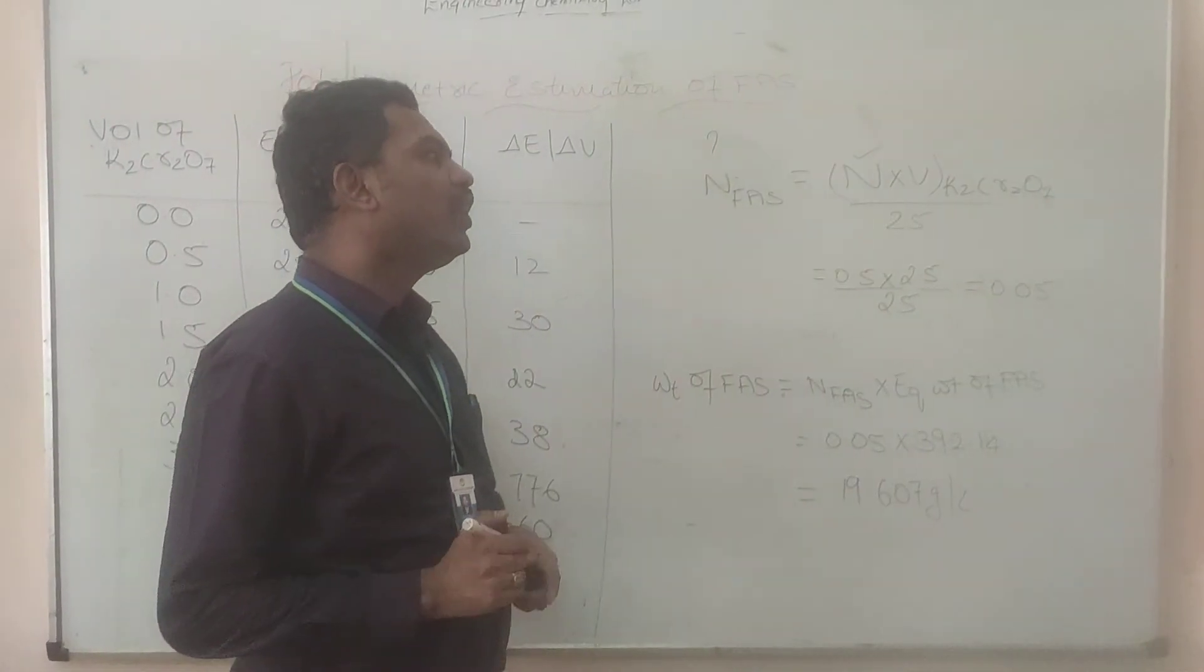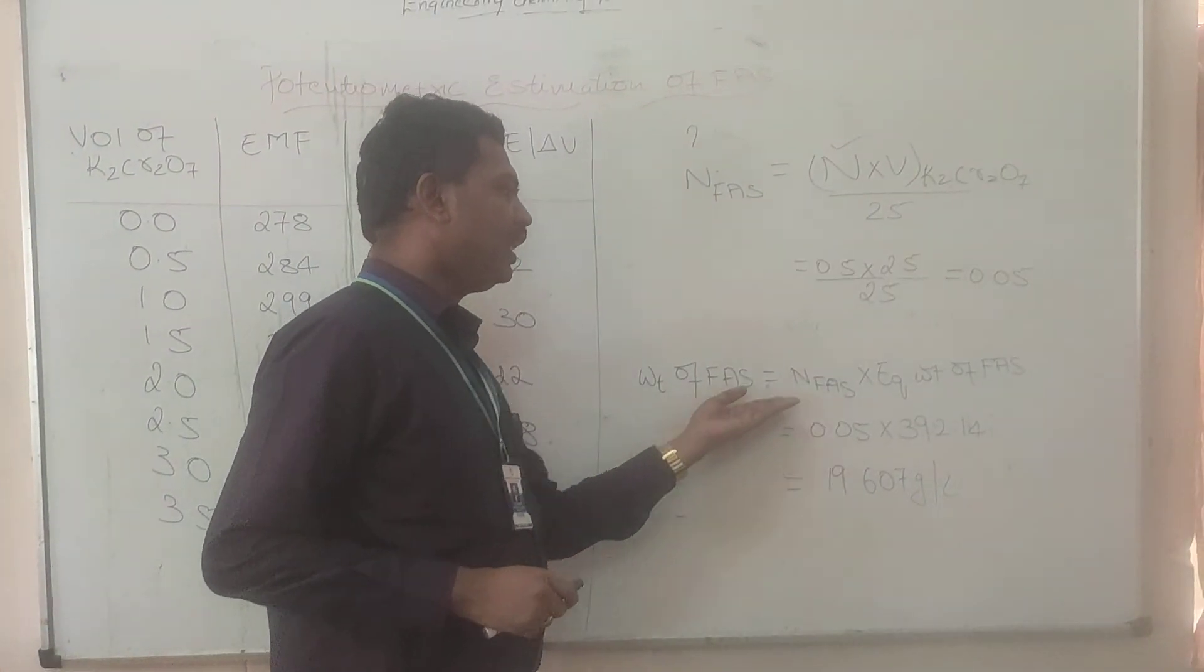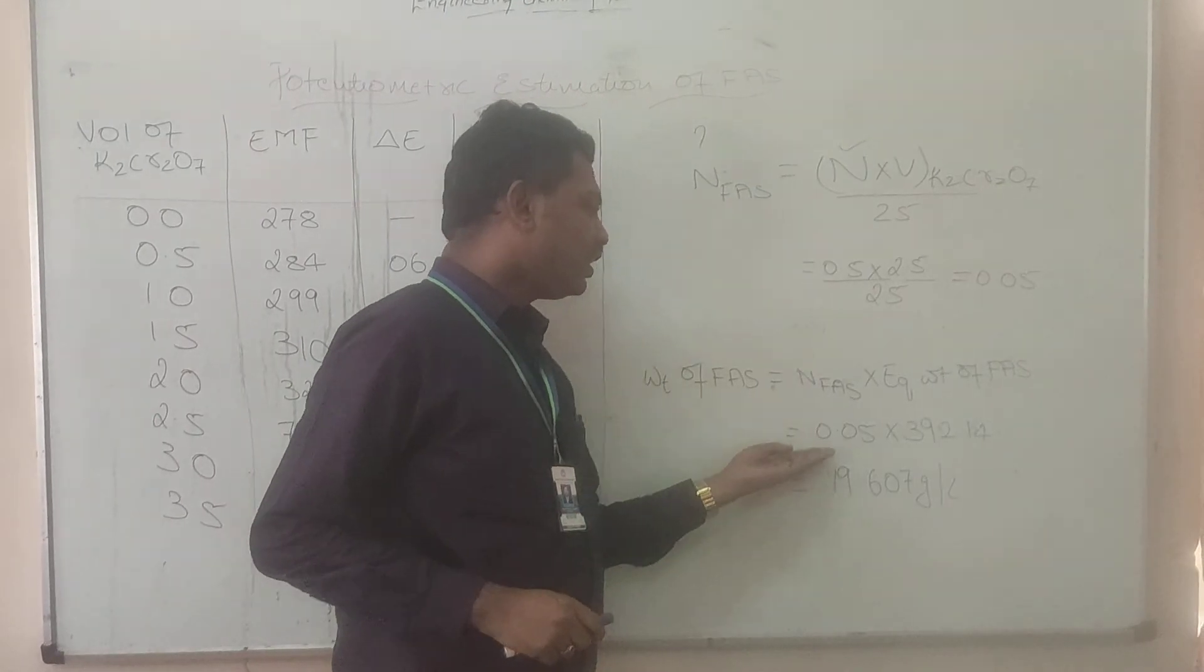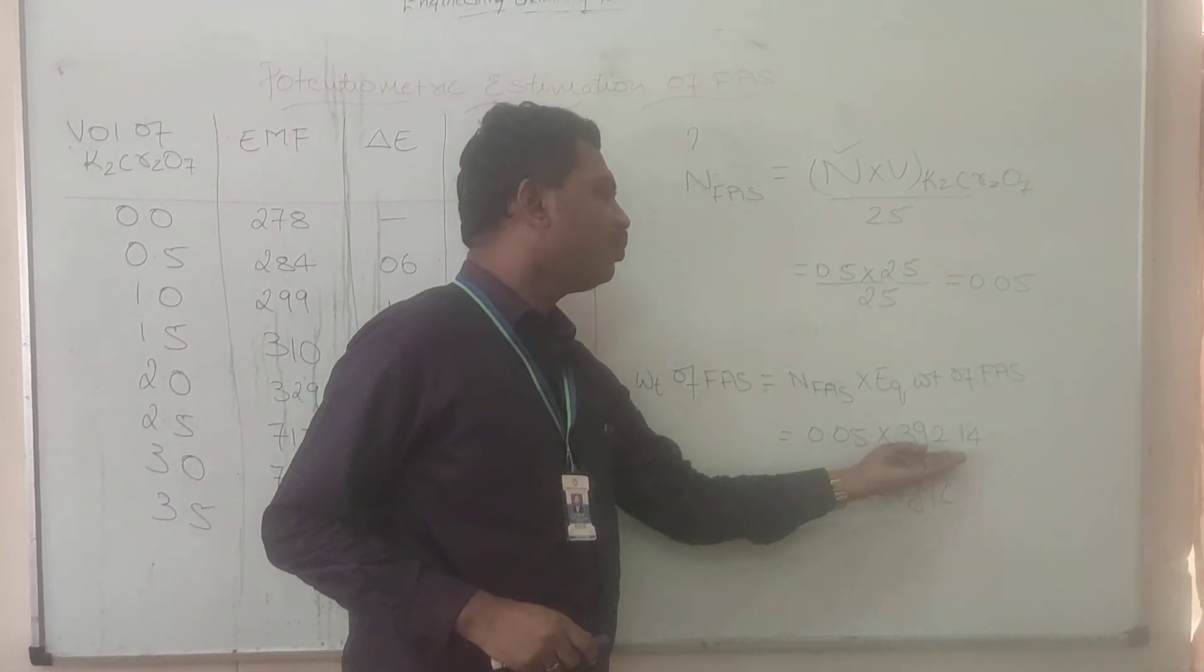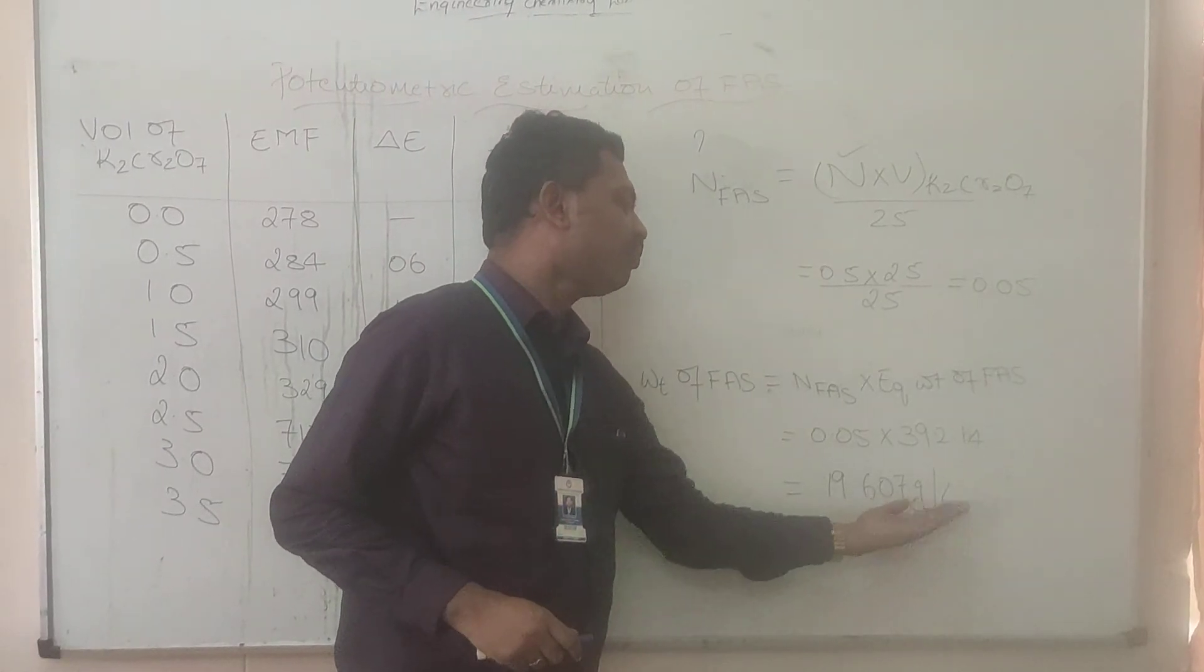So, we are supposed to find out the FAS present in the given sample. That is, weight of FAS equals normality of FAS times equivalent weight of FAS. That is, 0.05 times 392.14. That gives 19.607 grams per liter.